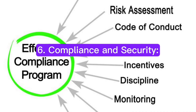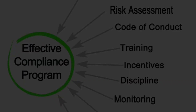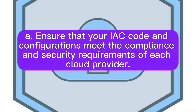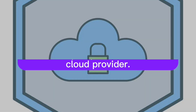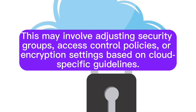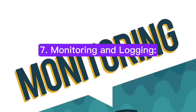Compliance and security. Ensure that your IAC code and configurations meet the compliance and security requirements of each cloud provider. This may involve adjusting security groups, access control policies, or encryption settings based on cloud-specific guidelines.